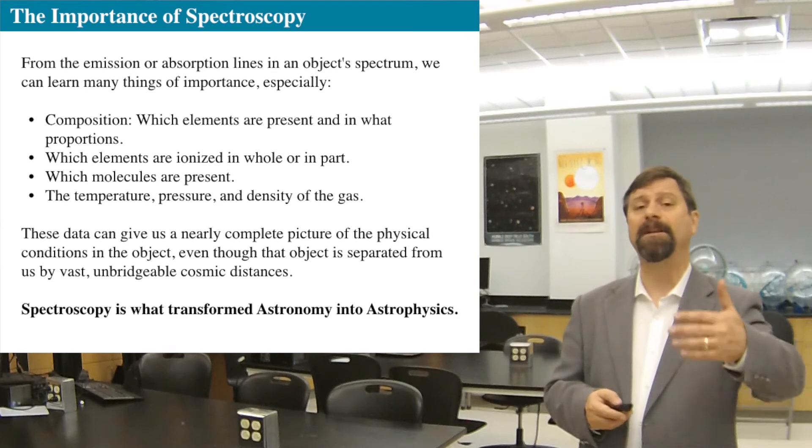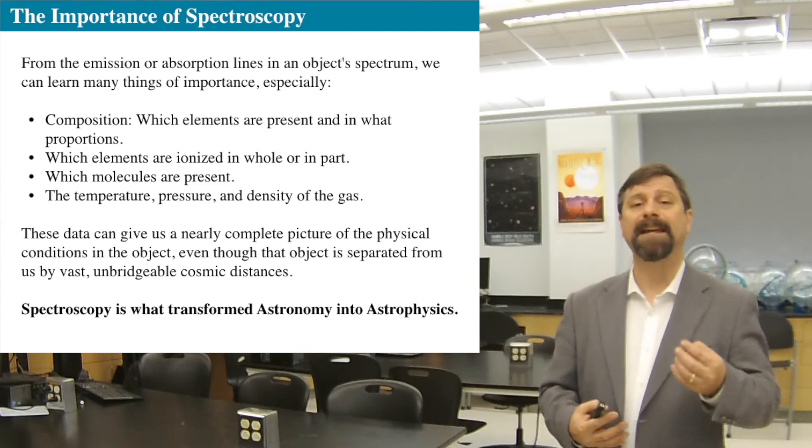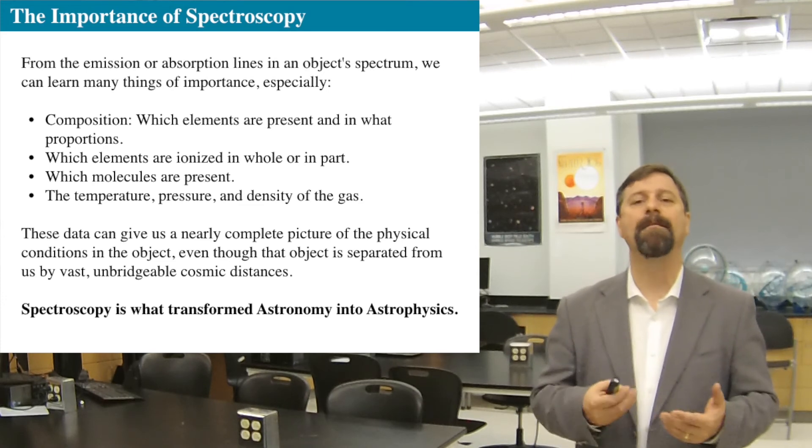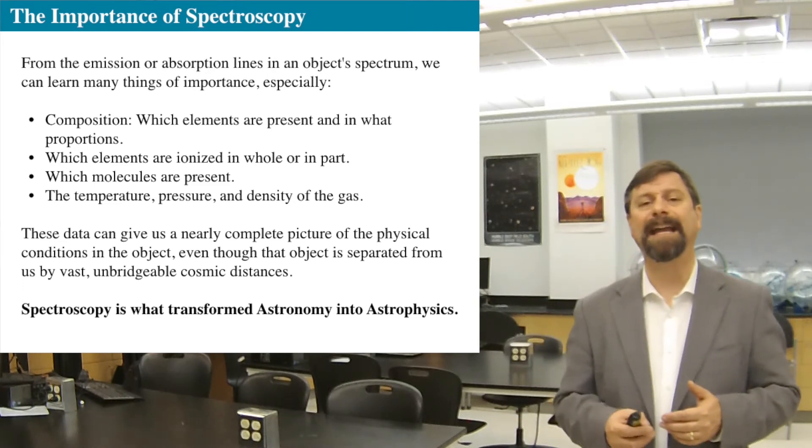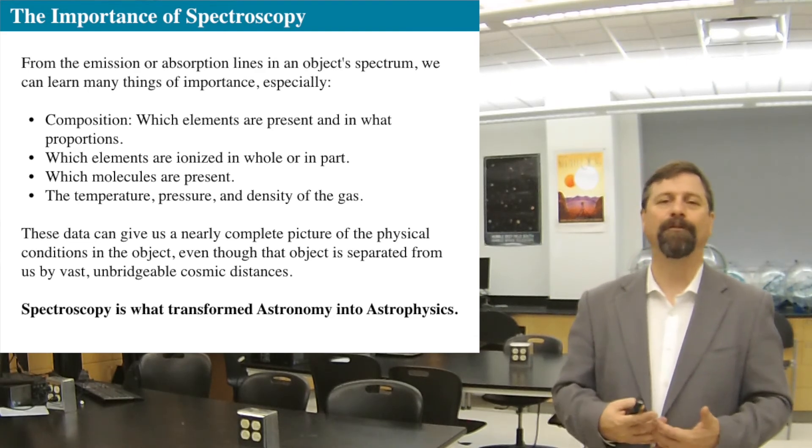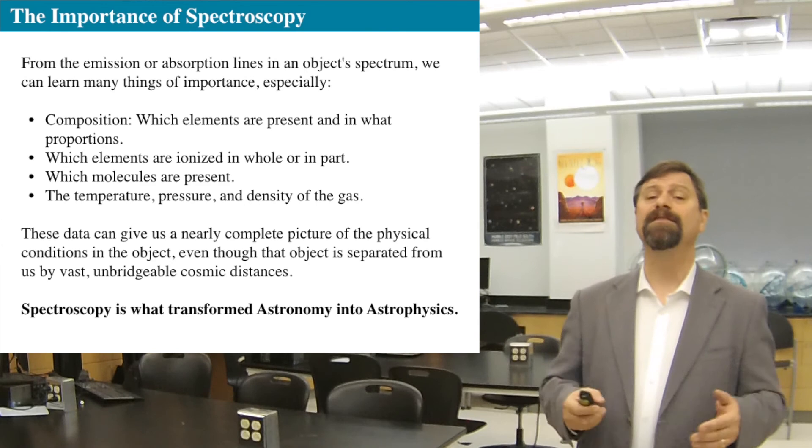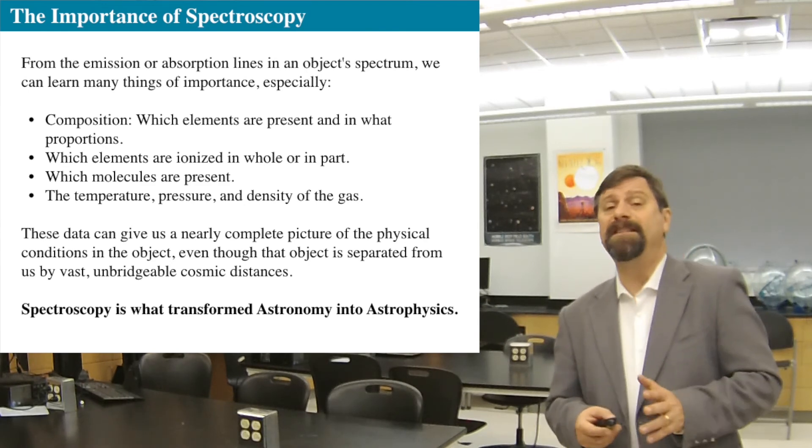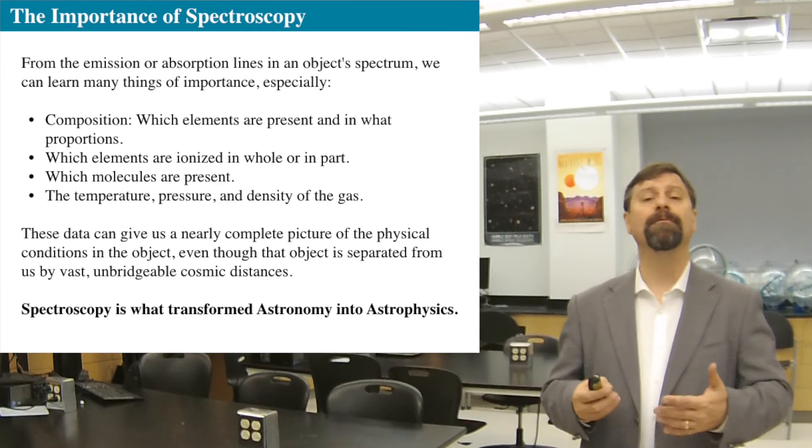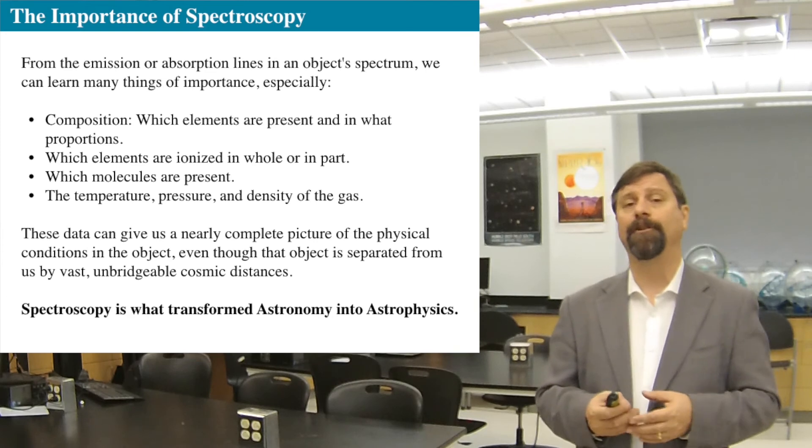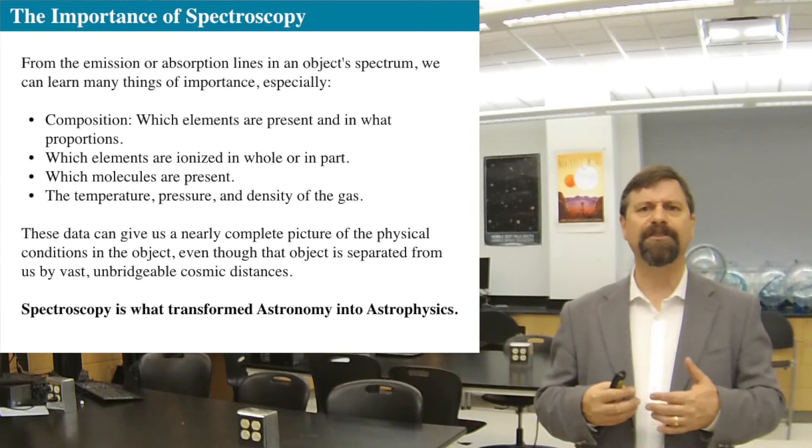Because now we can understand the elements such as pressure and density and temperature and composition, now we can do physics. The physics then allows us to understand what's really going on. Spectroscopy and the invention of the spectroscope and Kirchhoff's laws introduced the concept of astrophysics to astronomy. Because up until the concept of spectroscopy really took hold, we could never really know anything about what was going on in those stars. All we could learn is that this thing's moving, it's going across the sky, it's bright, but we didn't really understand the spectrum.